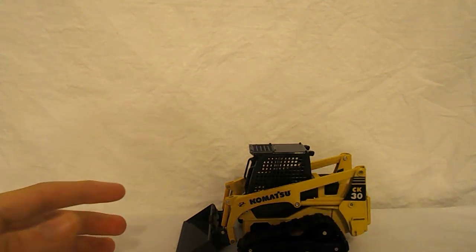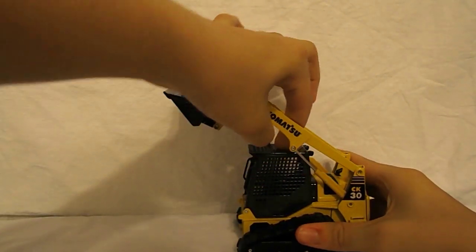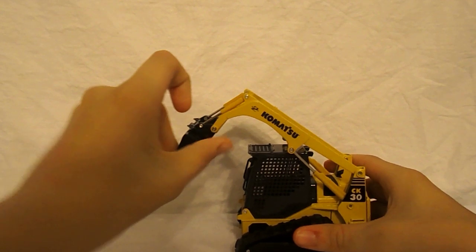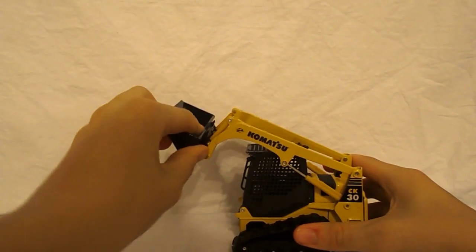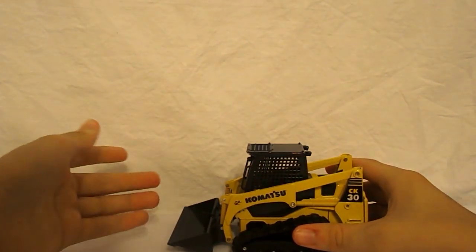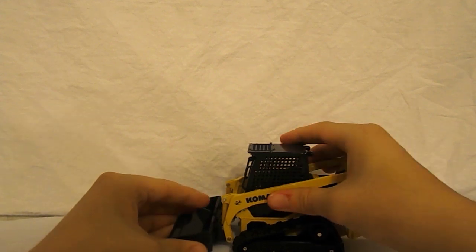So anyways, on with the model. The arms go up that high, and it dumps that much. And it can curl back somewhat, not as impressive as the 226.